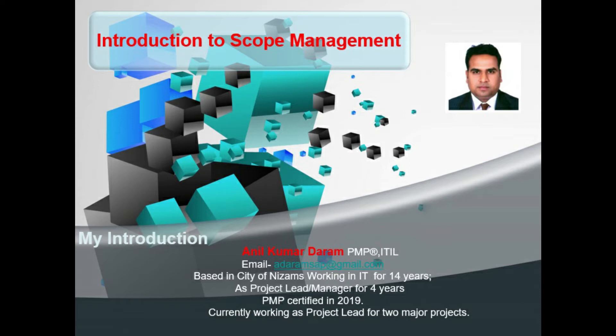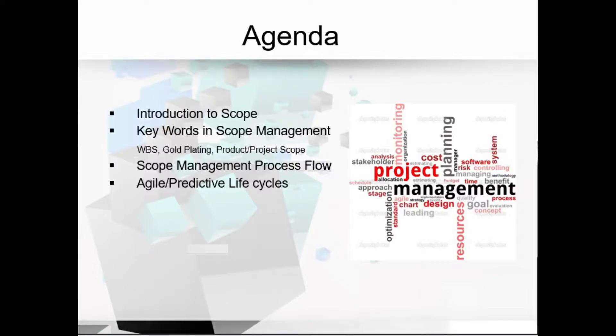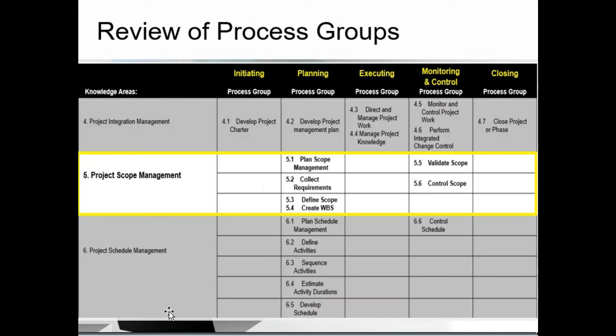Let's quickly move to our agenda for today's session. We are going to discuss scope management, predictive and agile project life cycles in terms of scope management, and the main six processes in scope management: plan scope management, collect requirements, define scope, create work breakdown structure, validate scope, and control scope.